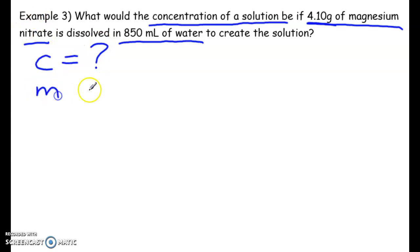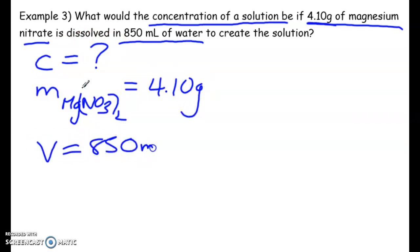So we're looking for concentration. We have the mass of magnesium nitrate, which is MgNO3 subscript 2, which is 4.10 grams. And we have the volume 850 milliliters.